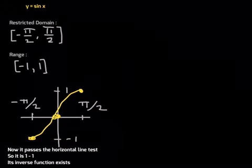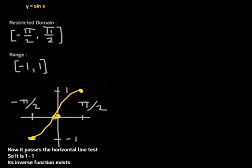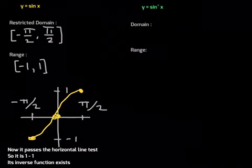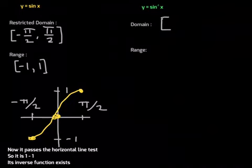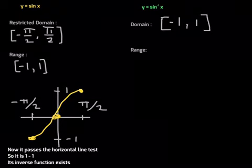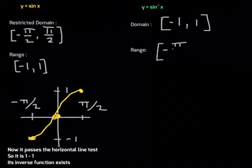Remember when you were studying inverse functions in algebra: the domain of this function becomes your range for the inverse, and the range of this function becomes the domain of its inverse. So the domain of inverse sine of x will be the same as the range for sine of x. The range for inverse sine will be the same as the restricted domain for sine of x. If you know one, it leads you to the other.